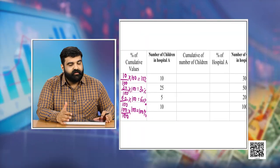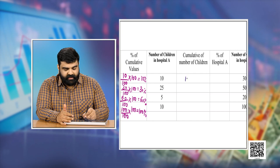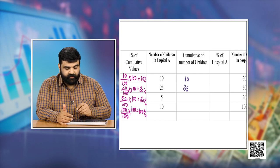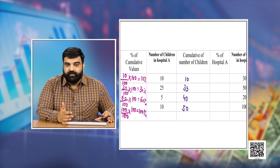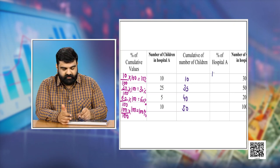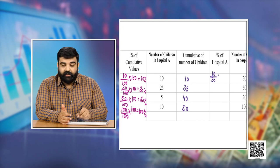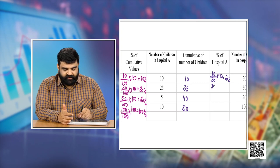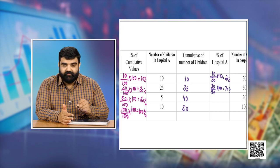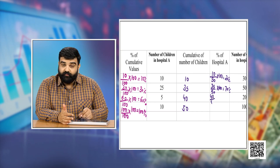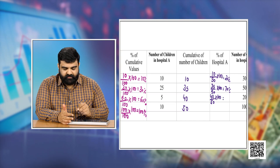Now let us calculate the cumulative of the frequencies for Hospital A. The number of children is 10, 25, 5, and 10, giving cumulative values of 10, 35, 40, and 50 — so the total is 50. The percentages are: 10/50×100 = 20%, 35/50×100 = 70%, 40/50×100 = 80%, and 50/50×100 = 100%.